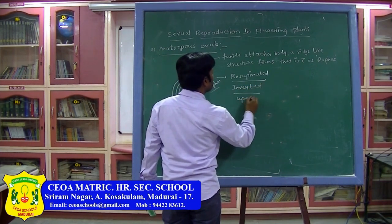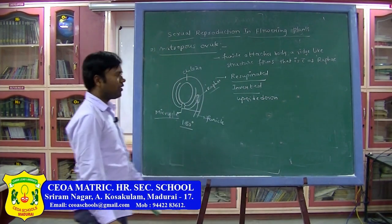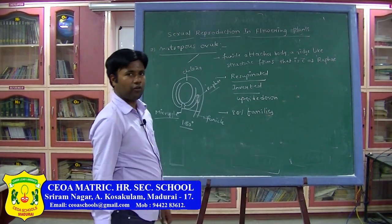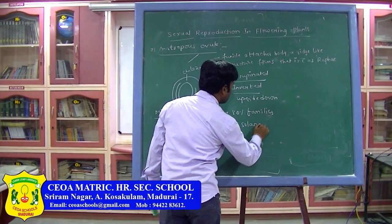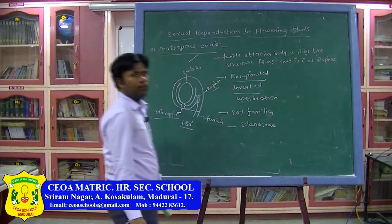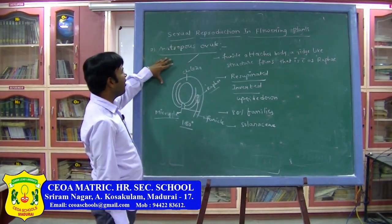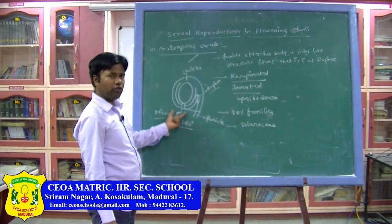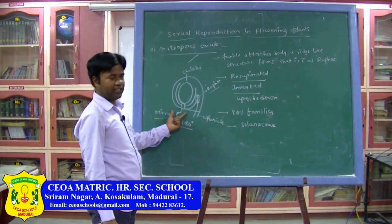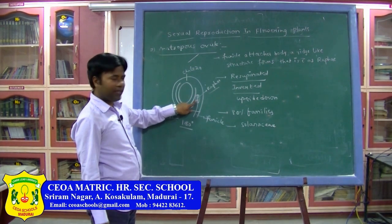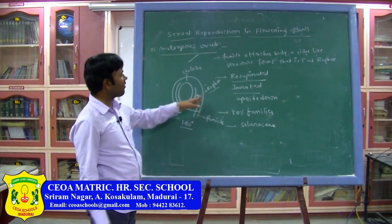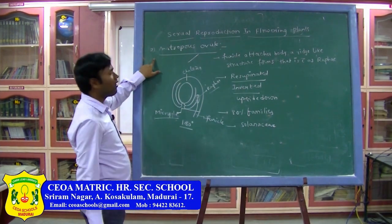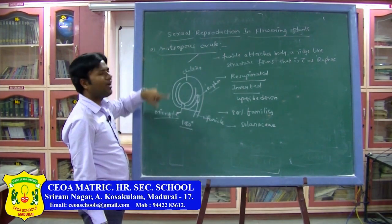About 80 percent of plant families possess the anatropous ovule, such as Solanaceae and Malvaceae. Key features to remember: micropyle and funicle are at 180 degrees, it is resupinated or inverted, and the funicle attached to the ovule body forms a ridge-like structure called the raphae. So we have now completed the second ovule type — anatropous — in addition to yesterday's orthotropous ovule.